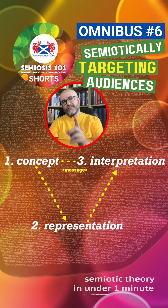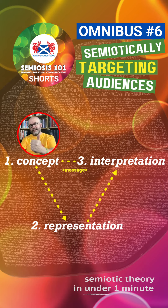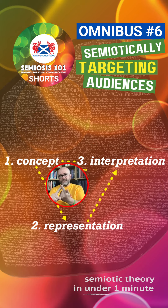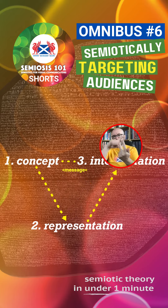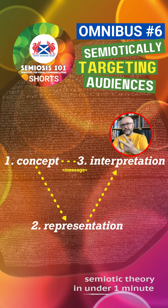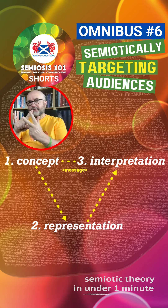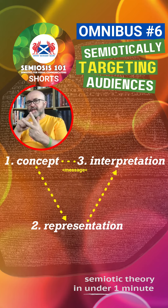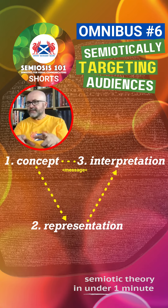Semiosis relies on a cycle of three stages: a concept, its representation, which leads to an interpretation. If successfully facilitated through sign action, then the concept reveals its message and meaning.